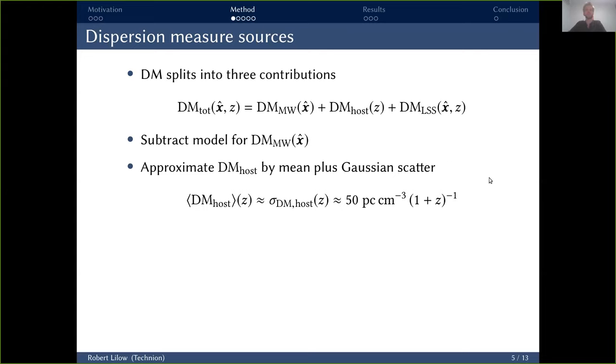The second is the contribution from the host galaxy. The host galaxy contribution cannot be modeled on an individual basis because we neither know the orientation of that host galaxy nor the position of the FRB emission in that galaxy. However, for the statistical analysis that we are planning to do, it's perfectly sufficient to just model this contribution by a mean plus a Gaussian scatter around it. And we approximate both to be of the same order, namely 50 parsec per cubic centimeters, which is roughly the same order that we find for the scatter of our own Milky Way.